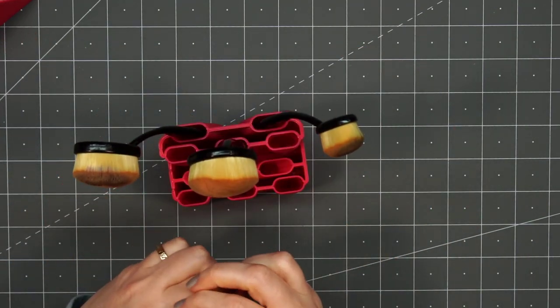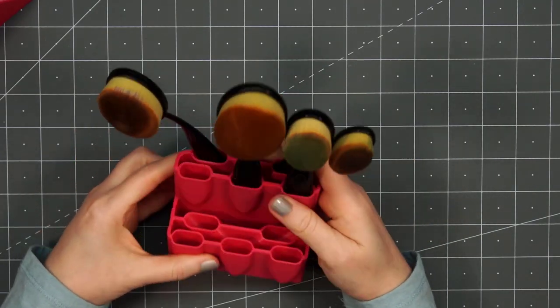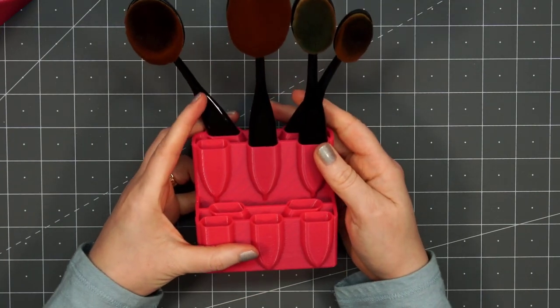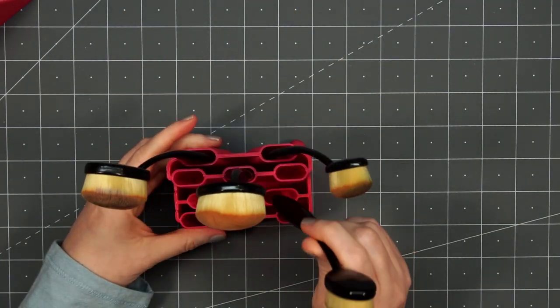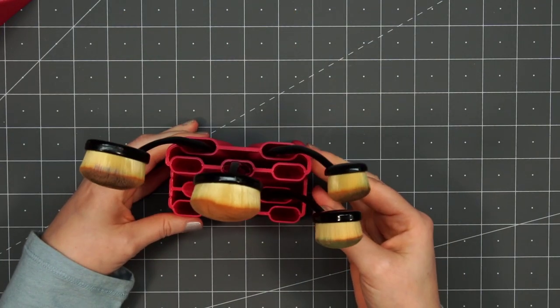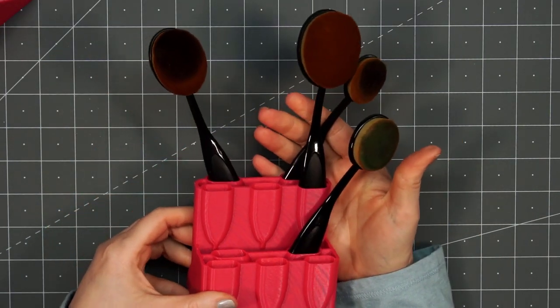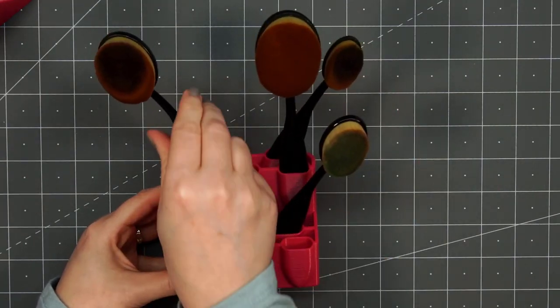And it doesn't matter which hole you stick your brush or even what size brush, they're not going to be blocking each other. So it's real easy to grab the color or the size brush that you need. So if I shift these all over to the right side, they're still not blocking at all.